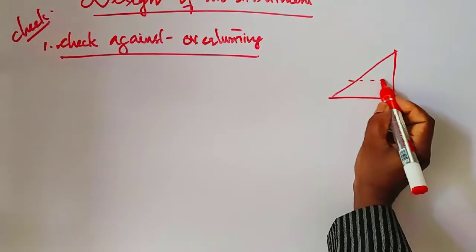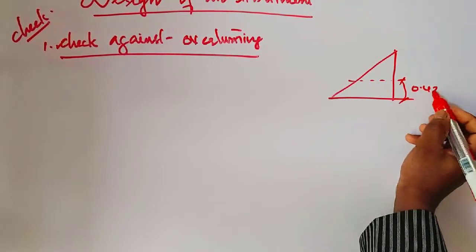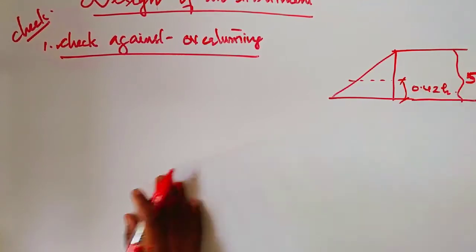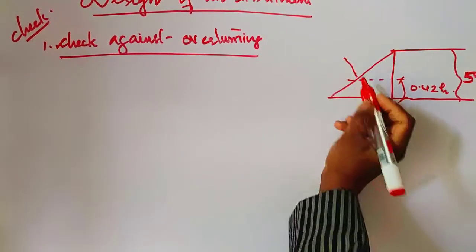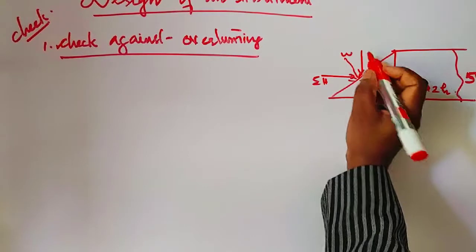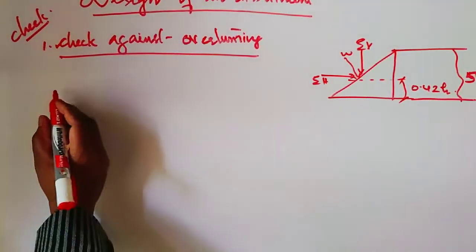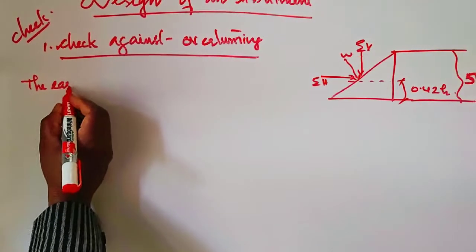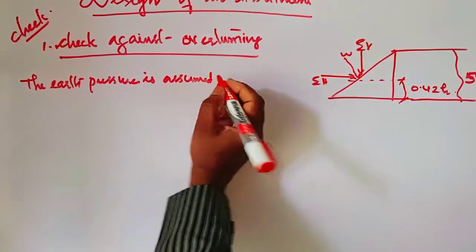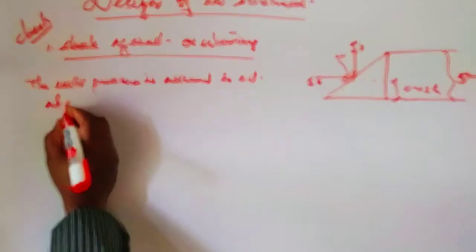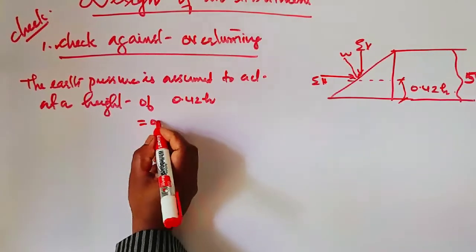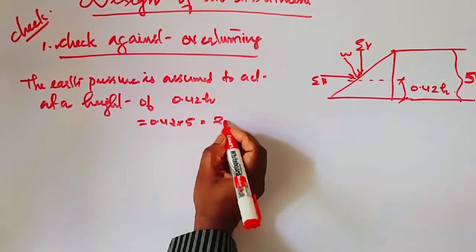The earth pressure is shown acting on the abutment. The earth pressure is assumed to act at a height of 0.42 times H from the base of the abutment. With H equal to 5 meters, this gives 0.42 × 5 = 2.1 meters from the base.